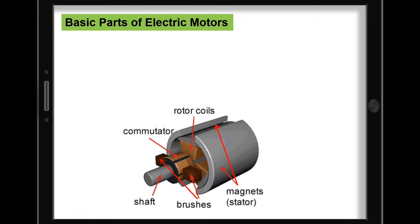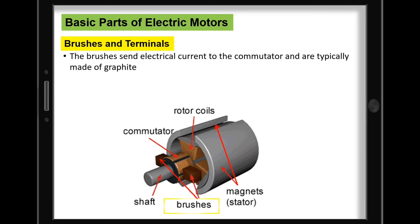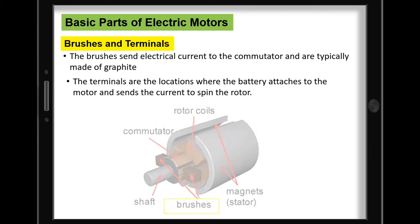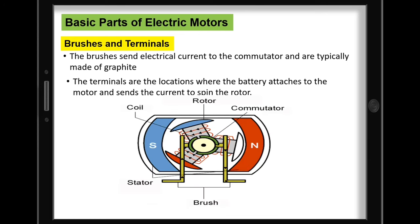In addition, at one end of the motor are the brushes and the terminals. They are at the opposite end from where the rotor exits the motor casing. The brushes send electrical current to the commutator and are typically made of graphite. Remember that motors can be brushless too. On the other hand, the terminals are the locations where the battery attaches to the motor and sends the current to spin the rotor.